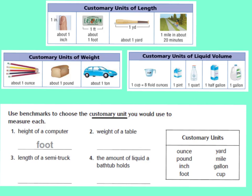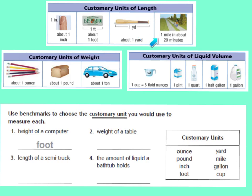Looking at our customary units of length: about one inch is the tip of your finger — from your fingertip down to your first knuckle, that's about one inch. One foot is about the length of a license plate. One yard is about the size of a baseball bat. And one mile is about the distance you'd walk in 20 minutes without stopping.